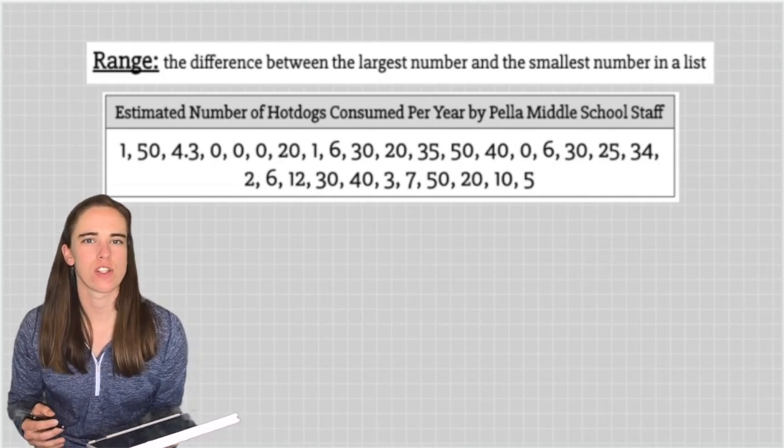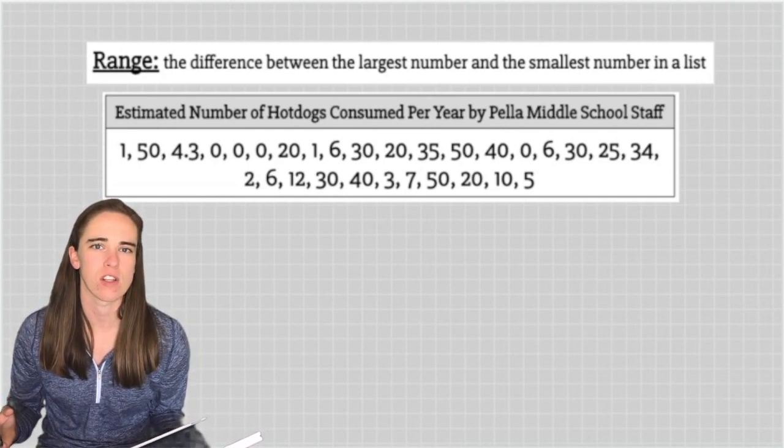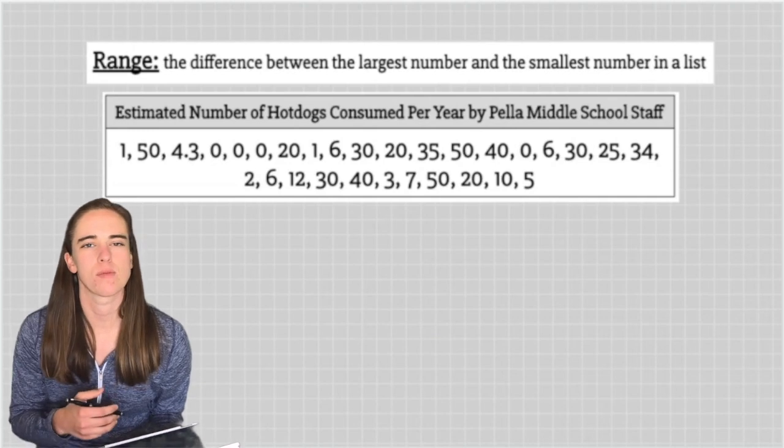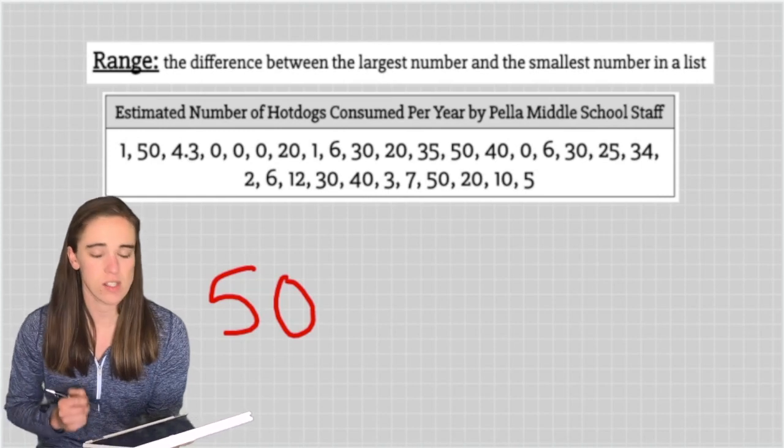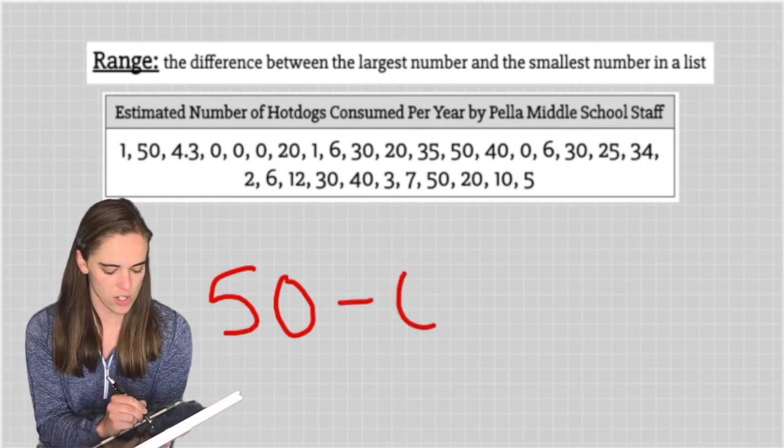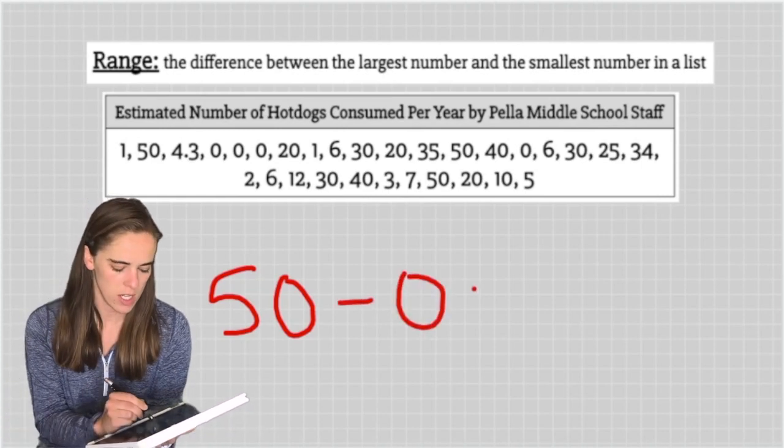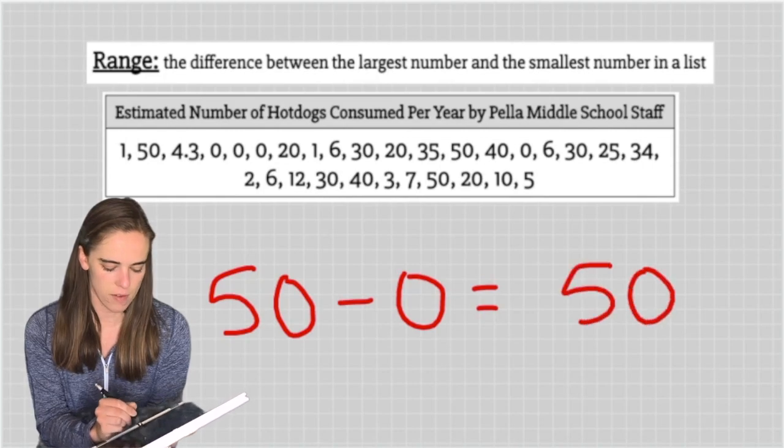The range is most often used to describe how spread apart our data is. We take the largest number and subtract the smallest number. In this data set, our largest number is 50 and our smallest is zero. So we take 50 minus zero to get a range of 50.